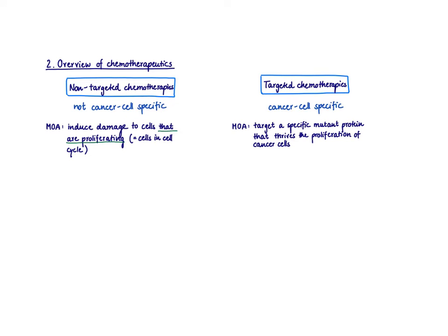Let's talk about our treatment options. Generally, from the three major characteristics, the uncontrolled growth and survival is the target of most current chemotherapies. We divide chemotherapies into two groups: non-targeted chemotherapies and targeted chemotherapies. These names are a little misleading. Non-targeted means the treatment is not cancer-cell specific — we just hit fast-dividing cells. Cancer cells are fast-proliferating, so we induce damage to cells that are in the cell cycle.